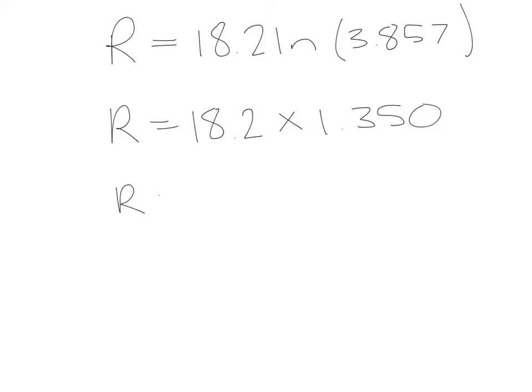So we have R is equal to 18.2 ln and then 16.2 divided by 4.2 is 3.857. The next line we have R is equal to 18.2 times ln 3.857. We would work that out on the calculator and we get 1.350 and the final step is to multiply those two numbers together. We get 24.57 ohms and again we're checking that we're rounding that correctly for the value that we get in the calculator.